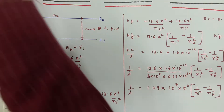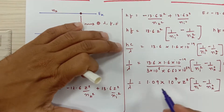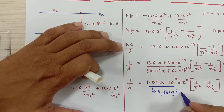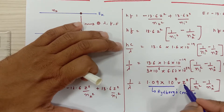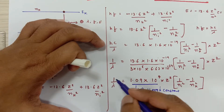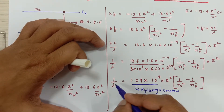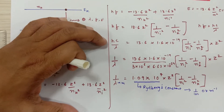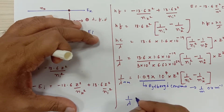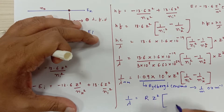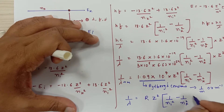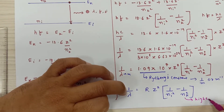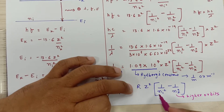We have reached the climax of the derivation. This constant, 1.09095 × 10⁷, is called Rydberg's constant. Z is the atomic number and has no unit; N is the orbit number and has no unit. So 1 upon lambda must have the same unit as Rydberg's constant. Since lambda is in meters, Rydberg's constant has SI unit of meter inverse. The final expression is: 1 upon lambda equals R times Z² times (1 upon Ni² minus 1 upon Nk²), where Ni is the lower orbit and Nk is the higher orbit.